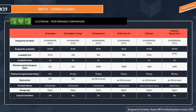Looking at the performance comparison across all storage classes: all options provide 11 nines of durability. For availability, S3 Standard provides 99.99%, S3 Intelligent Tiering provides 99.9%, S3 Standard IA provides 99.9%, S3 One Zone IA provides 99.5%, and Glacier and Glacier Deep Archive both provide 99.99%.